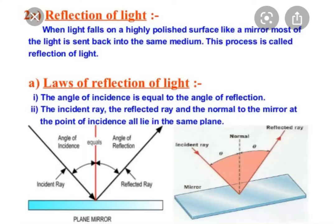Now we are starting with the first part of the chapter, that is reflection of light. You have studied reflection in lower standard. It is the phenomenon of returning back of light from a surface when it is incident on any surface. When light falls on a highly polished surface like a mirror, most of the light is sent back into the same medium, and this process is called reflection of light.